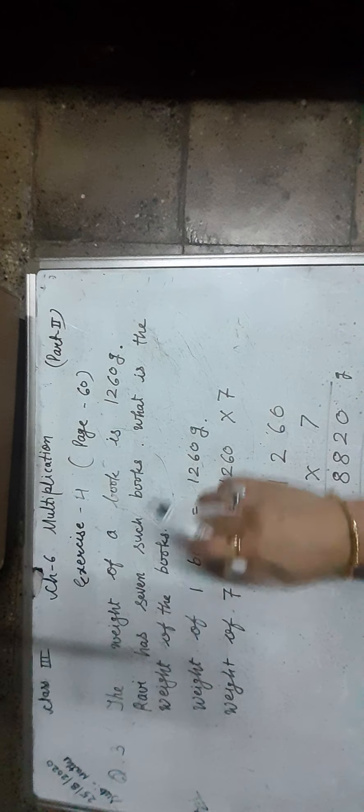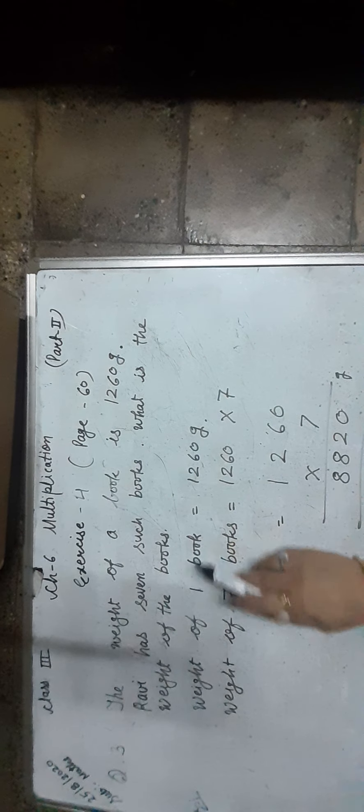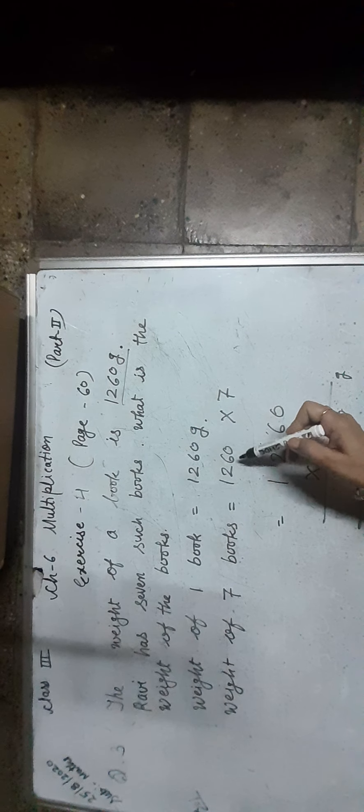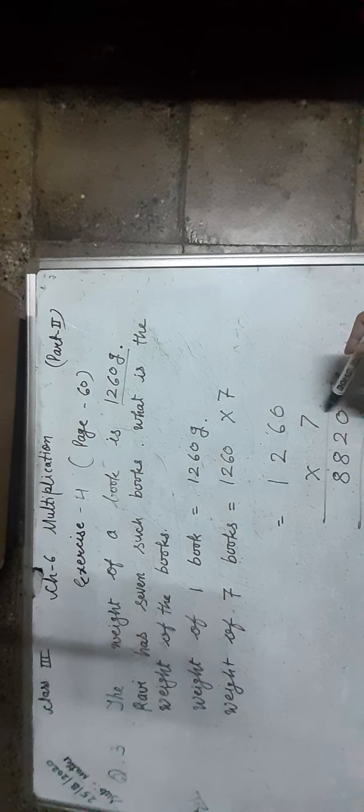Question 3: The weight of a book is 1,260 grams and Ravi has 7 such books. What is the total weight of the books? Weight of 1 book is 1,260 grams. Weight of 7 books is 1,260 × 7. Arranging in vertical columns, we get 8,820. So the total weight of 7 books is 8,820 grams.